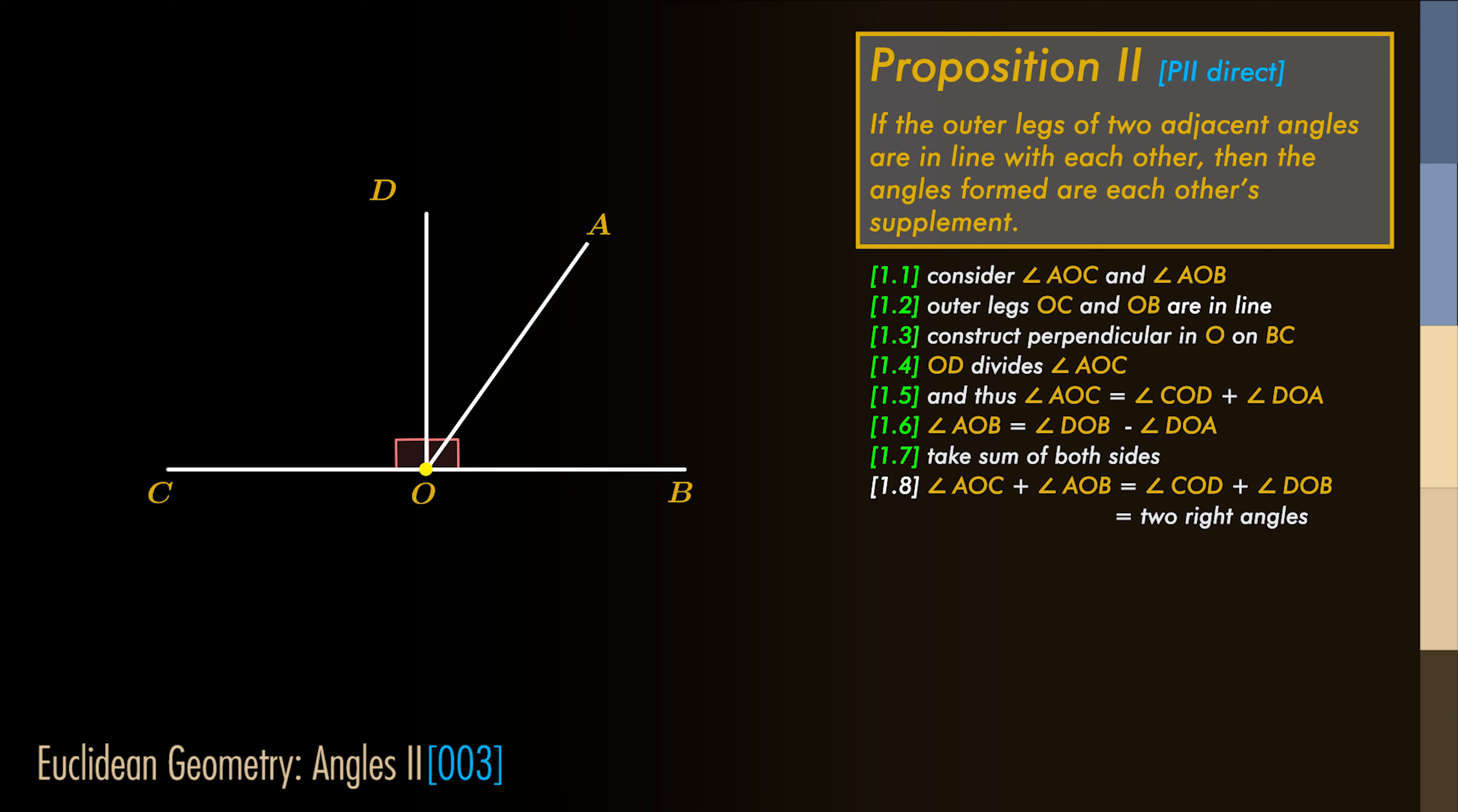Now let's take the sum of both sides of the equation. We get that the angle AOC plus the angle AOB equals the angle COD plus the angle DOB.